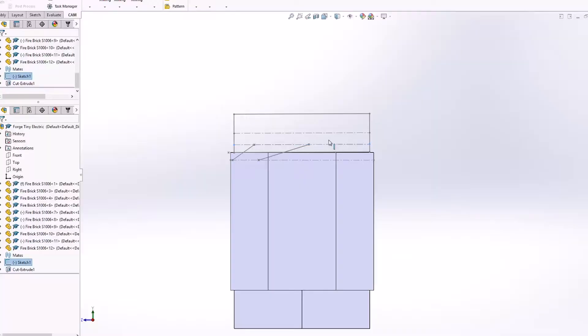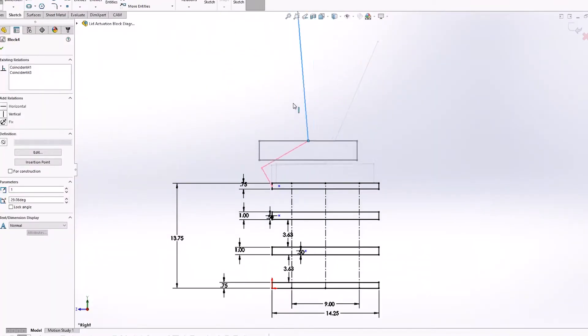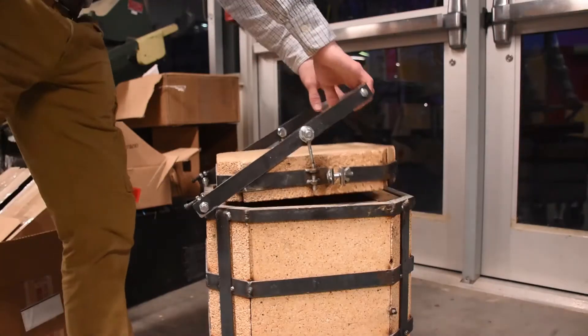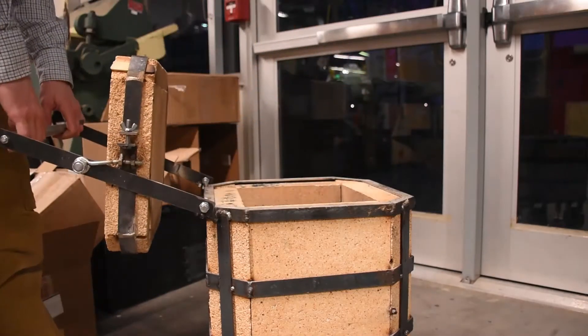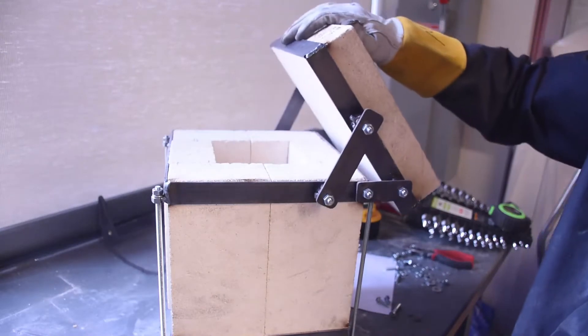The lid was designed in SolidWorks using sketch blocks like I did with my first foundry. I wasn't super happy with my first lid design and so I did this one differently, and it's based on a four bar linkage and works perfectly.